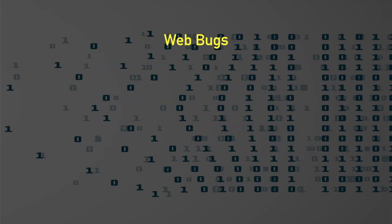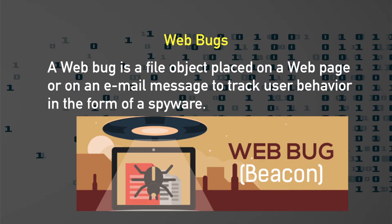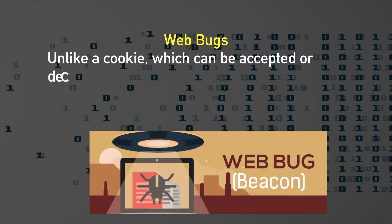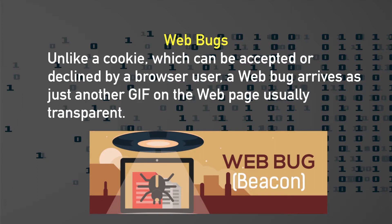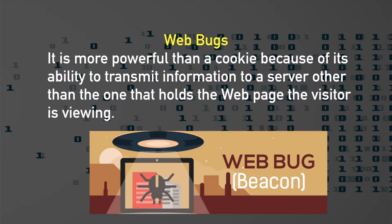The web bug is the next concern. It is a file object placed on a web page or in an email message to track the user's behavior in the form of spyware. Unlike a cookie, which can be accepted or declined by a browser user, a web bug arrives as just another GIF on web pages, usually transparent. It is more powerful than a cookie because of its ability to transmit information to a server other than the one holding the web page the visitor is viewing.